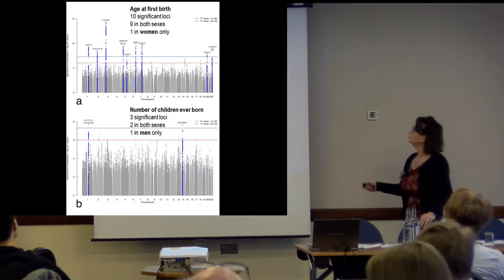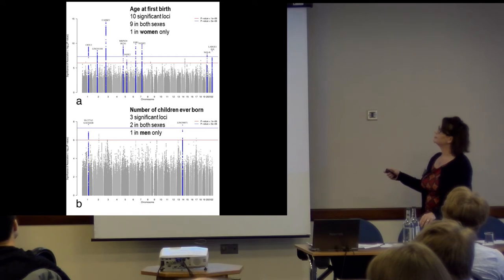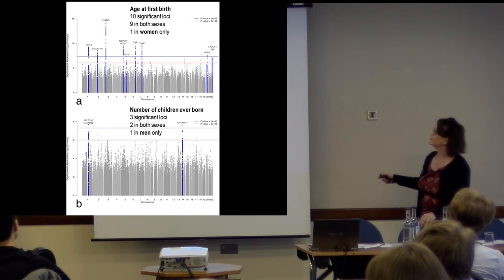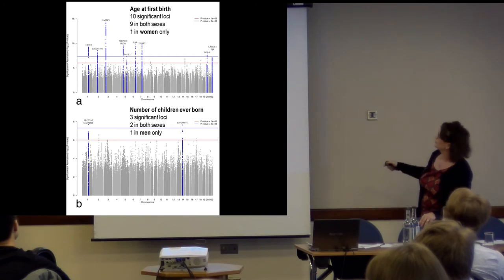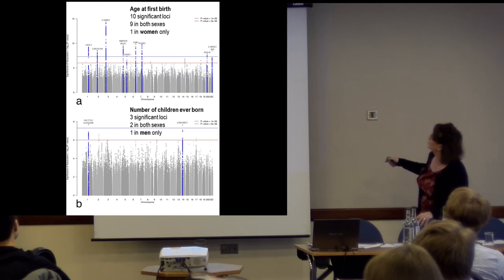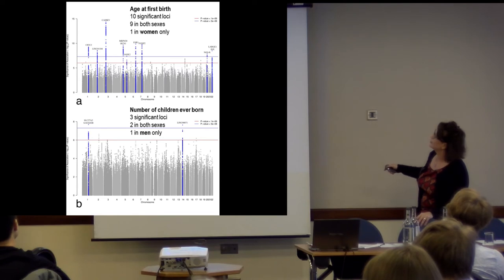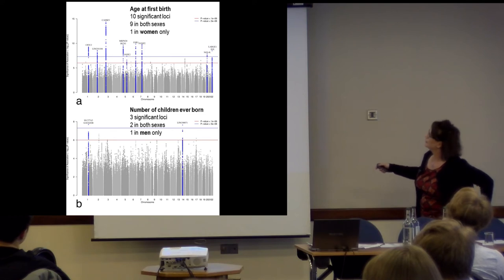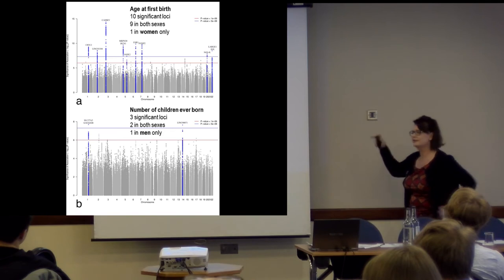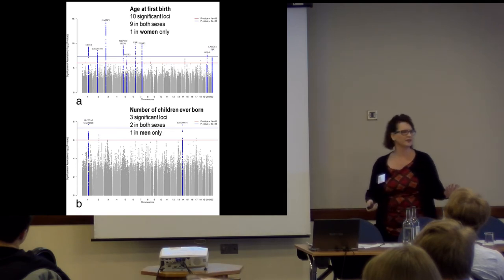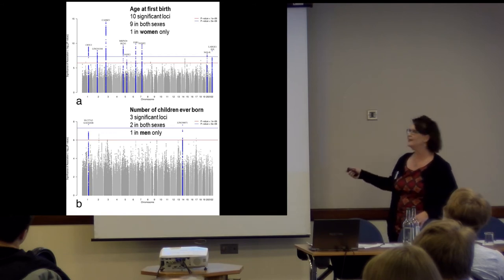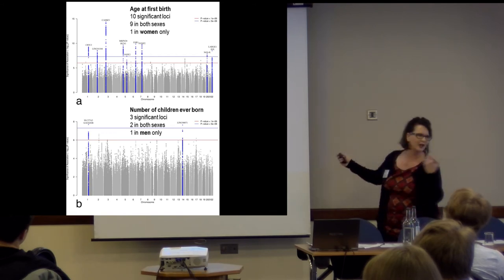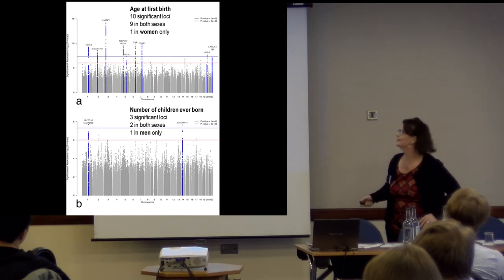For age at first birth we found ten significant loci. These plots are called Manhattan plots because they sort of look like the skyline of Manhattan. The x-axis shows chromosomes, the y-axis shows significance level — above P=10^-8 means a significant hit. We found all of these different loci — some only in men, and some only in women. Then we turned it over to the biologists, bioinformatics people, and molecular geneticists to figure out what these genes are doing — are they causal, are they related to methylation, what's been found about them before, how do they relate in a network?